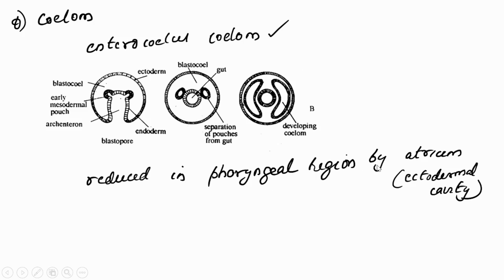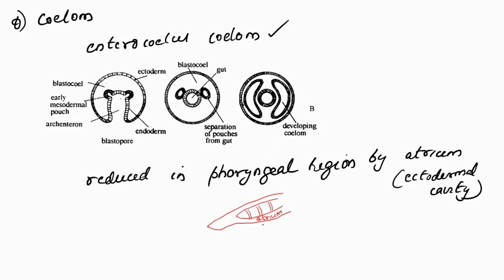This coelom is greatly reduced towards the pharyngeal region. Towards the pharynx, the pharynx is perforated by gill slits. Towards the pharynx there is another cavity called the atrium. Because the atrium is present there, the space of the enterocoelom is highly reduced towards the pharyngeal region.